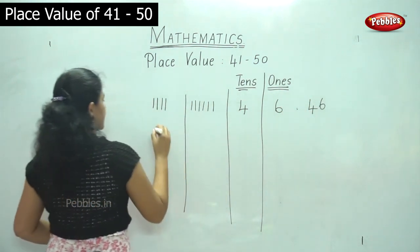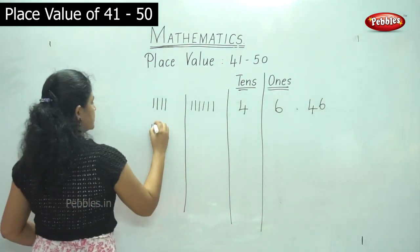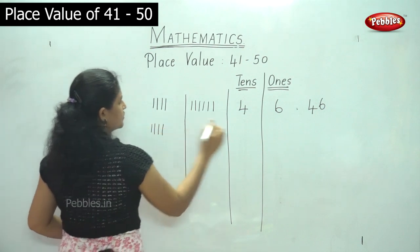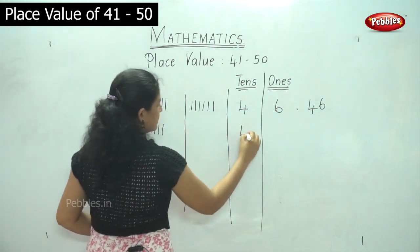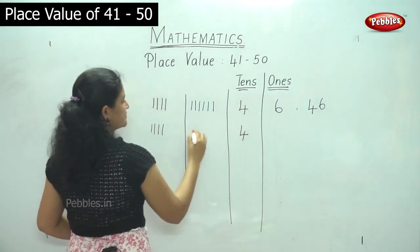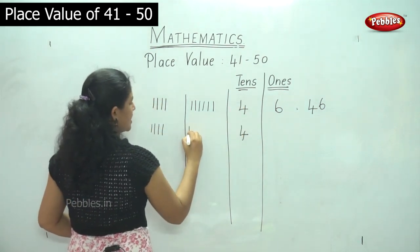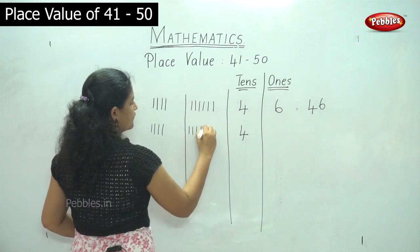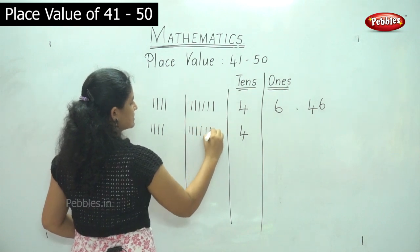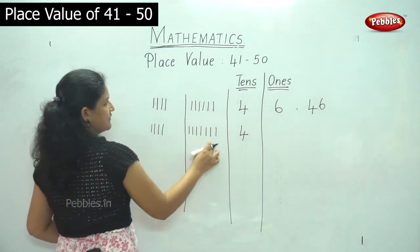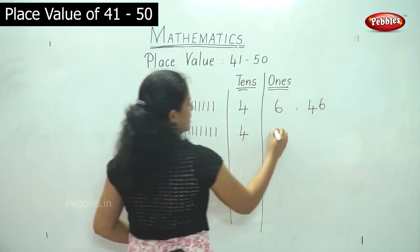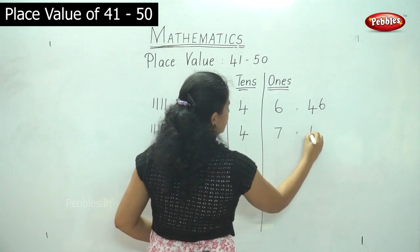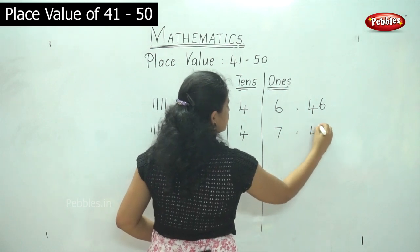Then I have 1, 2, 3, 4 — 4 tens — and in the ones place 1, 2, 3, 4, 5, 6, 7 — 7 ones. It gives me the number 47.